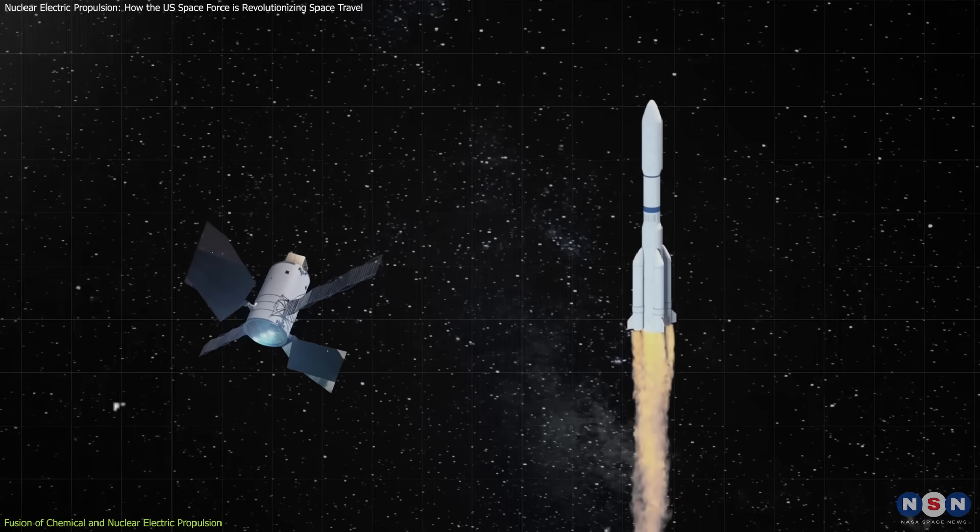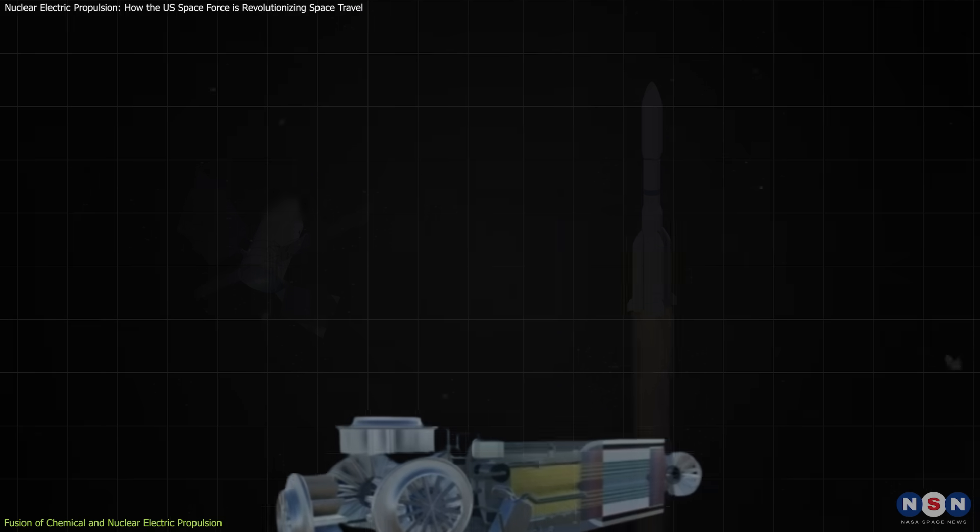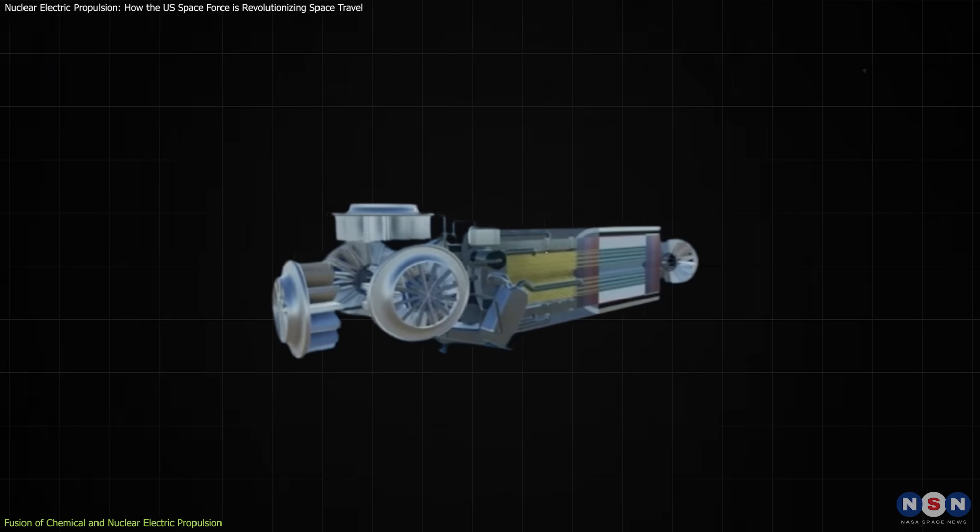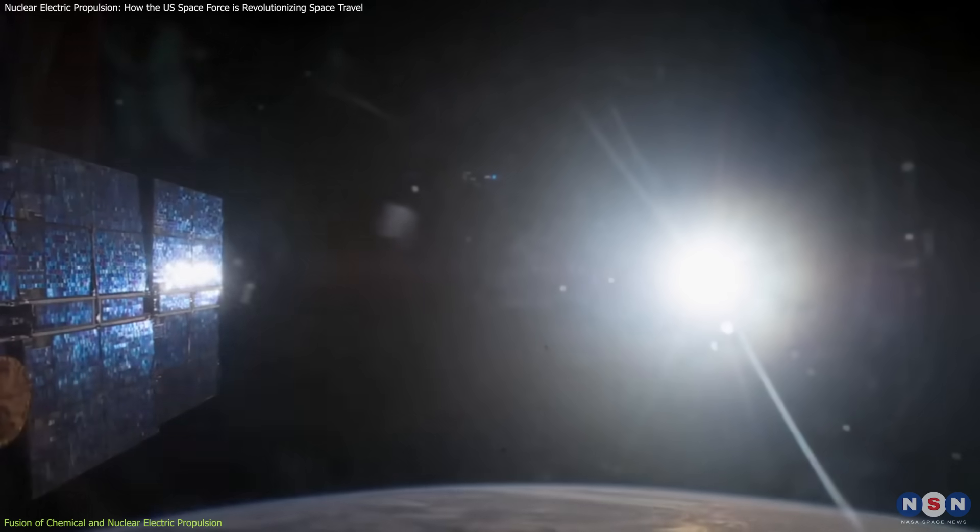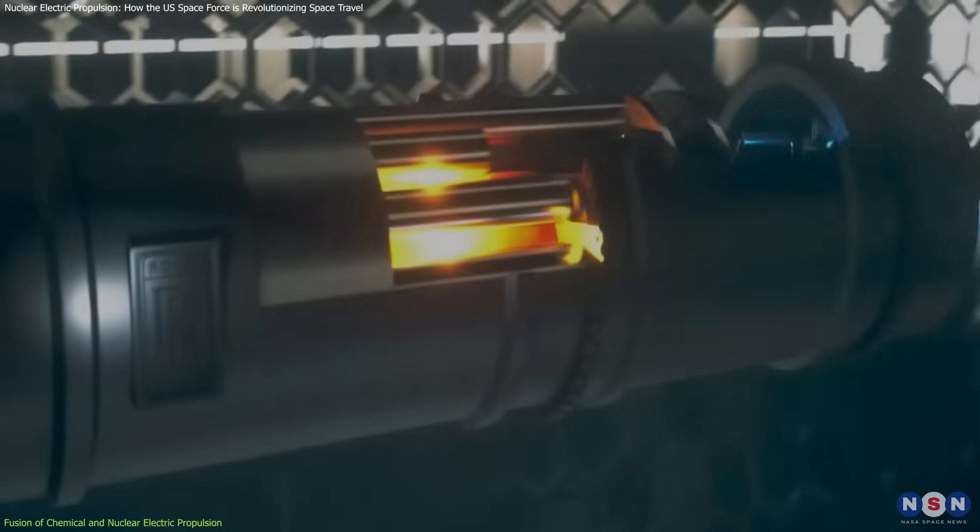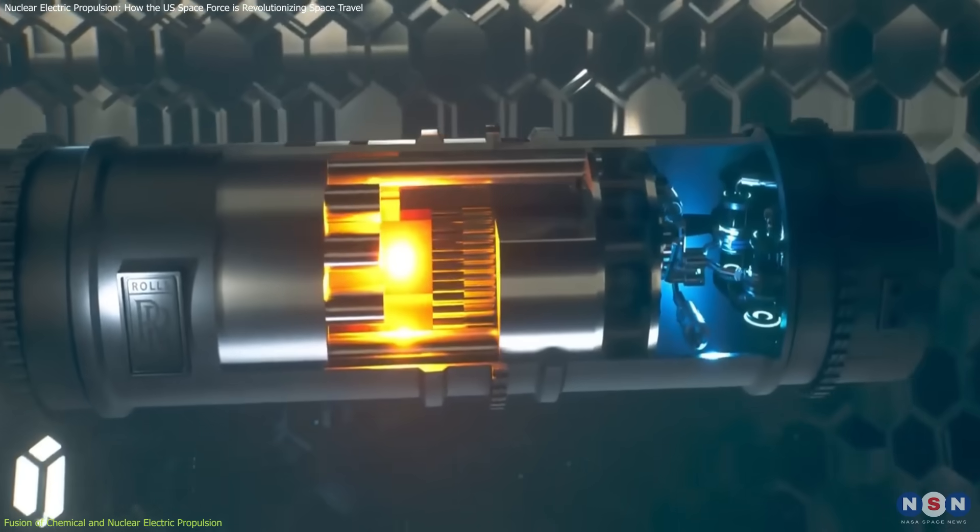The innovation here lies in combining these technologies, leveraging a nuclear microreactor to power electric propulsion. Unlike solar panels, which lose efficiency as distance from the sun increases, a nuclear microreactor offers a consistent power source.